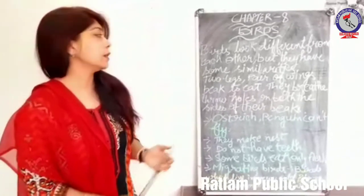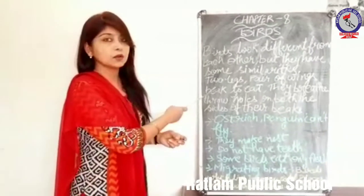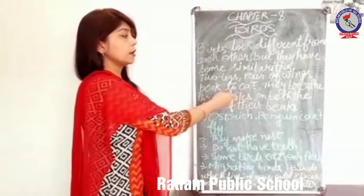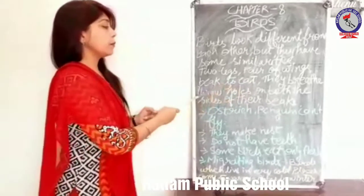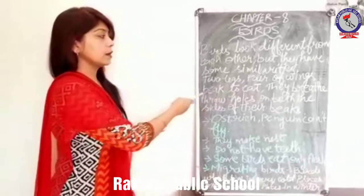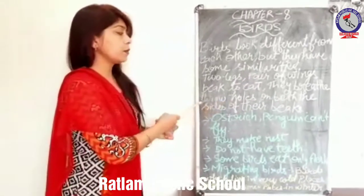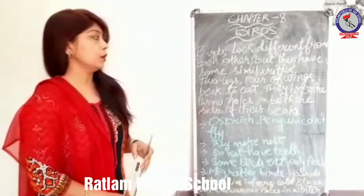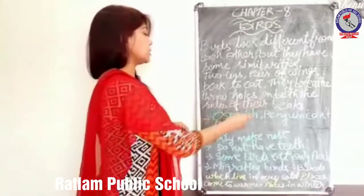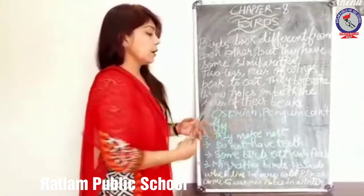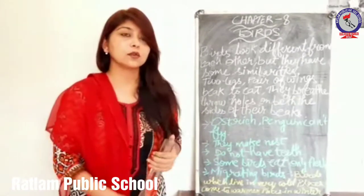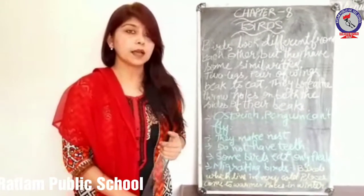All birds have two legs, a pair of wings, and a beak to eat food. They breathe through holes on both sides of their beak. Birds have two holes on both sides of their beak through which they breathe.